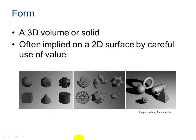Form is another element of design. Form is different from shape in that it is a 3D volume or solid. It's often implied on a 2D surface, as we see in the images below, using a careful use of value to help achieve this. Form is three-dimensional. Here we see geometric form, here mechanical form, and here different types of form.